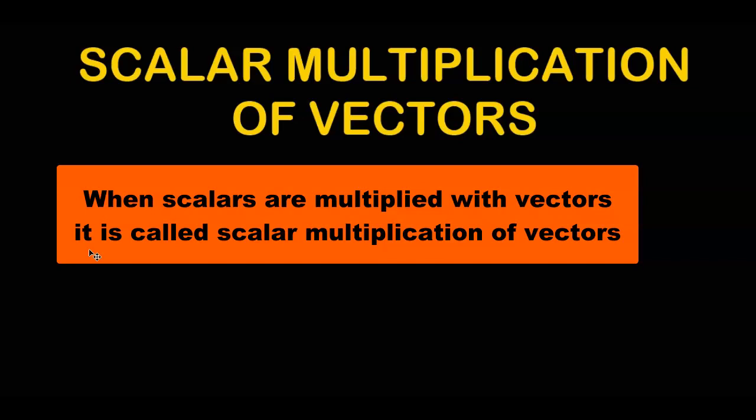So a simple definition of scalar multiplication of vectors is that when a scalar is multiplied with a vector quantity is called scalar multiplication of vectors. A scalar is a simple number with no direction on it and vector we all know is a number with direction.